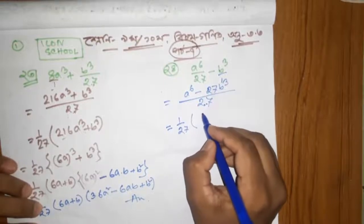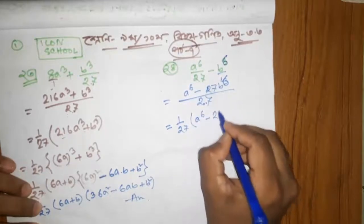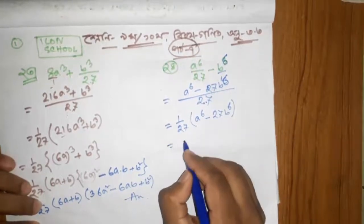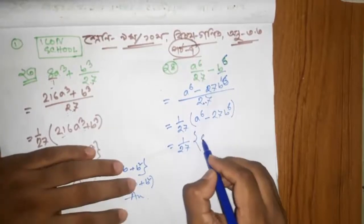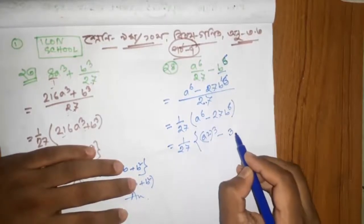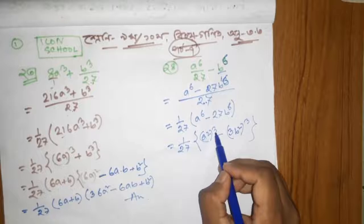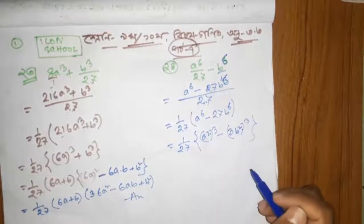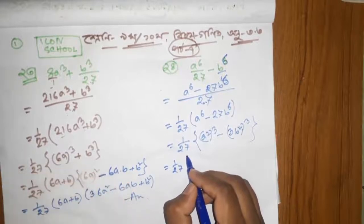Here is the question. I will say here is b to the 6th. So here is b to 6 minus 27 b to 6. 1 by 27. Now I will add a square cube minus a square cube b square cube. Then a square cube, a square cube, b to 6, b square cube. 27, 1 by 27, a square cube.